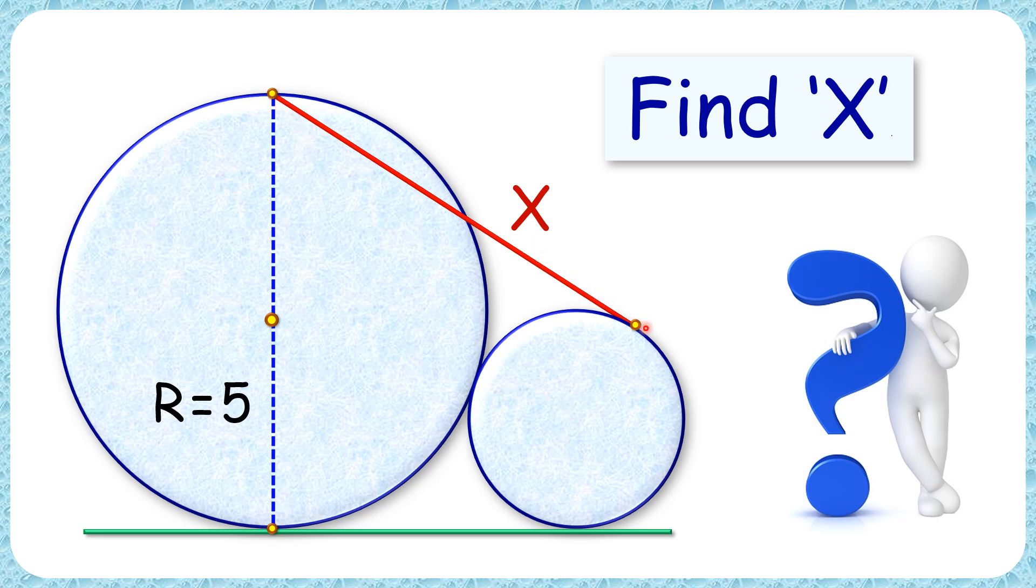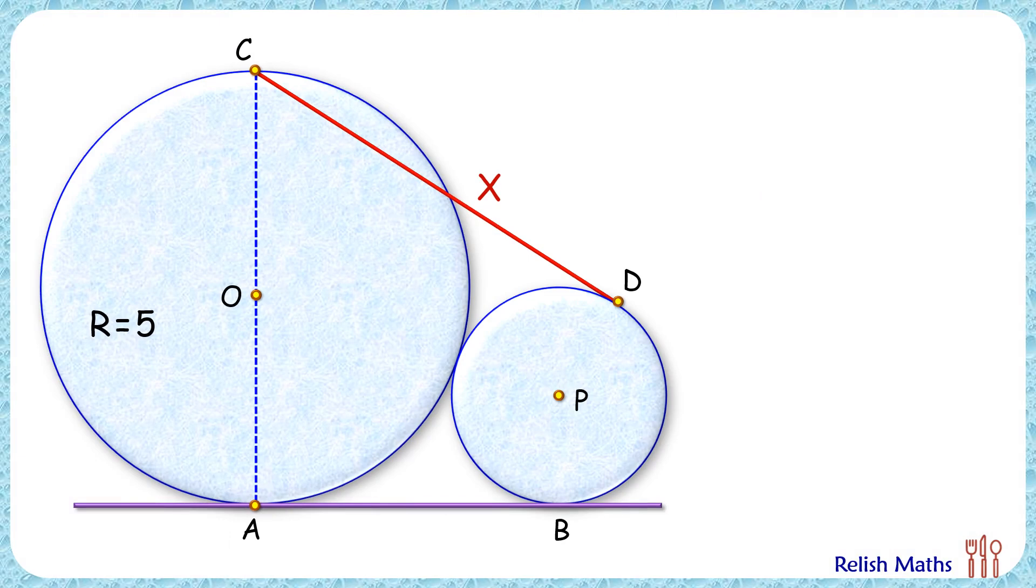Let's check the solution. Let's assume for the small circle the radius is r centimeters.